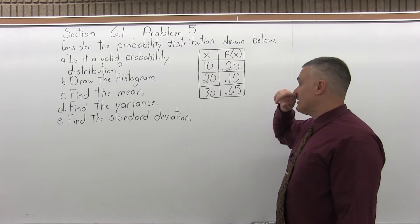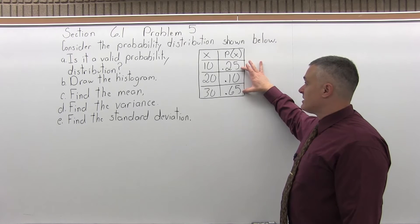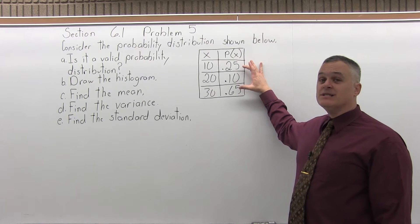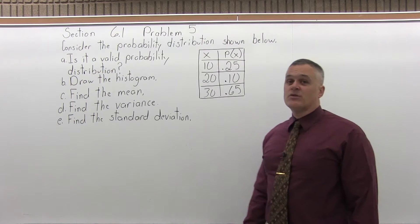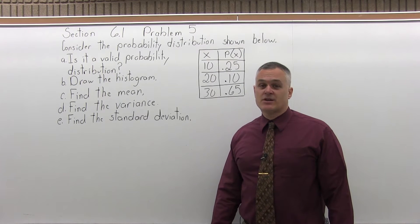Everything in the first column is a number. The second requirement is that everything in the second column is a value between zero and one, which is also the case, that's good. And the third requirement is that the total of the second column is one.